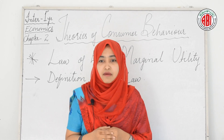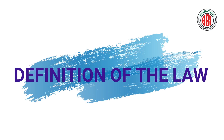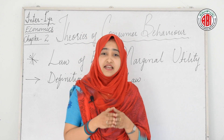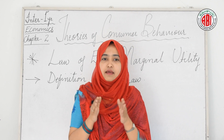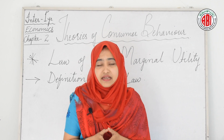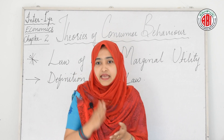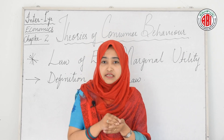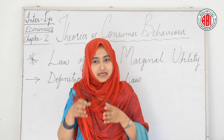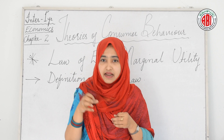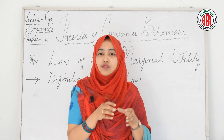Definition of the law: If a person has a thing which can be put to several uses, he will distribute it among these uses in such a way that it has the same marginal utility in all. If it has a greater marginal utility in one use than in another, he would gain by taking away some of it from the second and applying it to the first. This definition is given by Alfred Marshall.